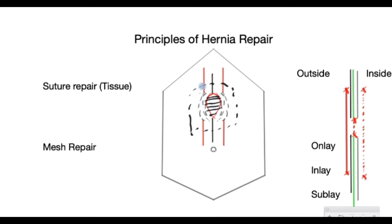The mesh can be placed in different positions. In a cut section of the abdominal wall, with the front and the inside visible, the mesh can be placed at the front — this is called the onlay technique — or just within the gap, which is called the inlay technique.